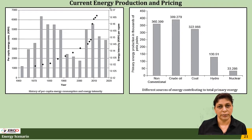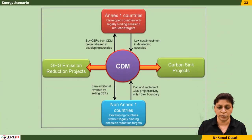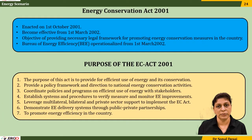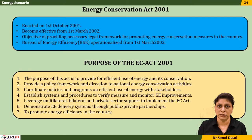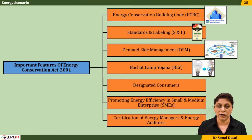Certain policies are discussed including the National Electricity Policy, Rural Electrification Policy, Energy Conservation Act, and Tariff Policy. Clean Development Mechanism (CDM) is explained — what is being decided and what measures have been taken by developed and underdeveloped countries. Important measures by the Indian government under the Energy Conservation Act are also shown, such as development of the ECBC code for buildings, the Standards and Labeling procedure for equipment, demand side management, the Budget Lamp Yojana, designated consumers, and the certification procedure for energy managers and auditors.